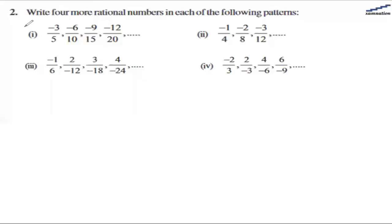In this question we are asked to find 4 more rational numbers in each of the following patterns. We are given a sequence and we need to figure out which rational numbers will come after. Let's see the first part.